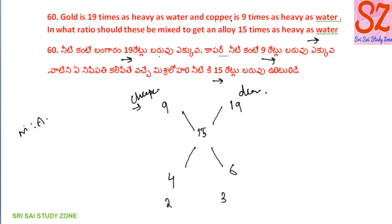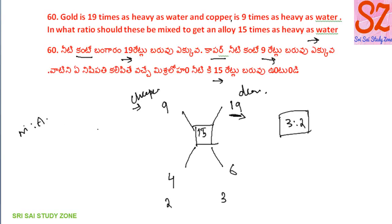Bangaram (gold) and copper ratio. So gold is 3 parts and copper is 2 parts, giving gold to copper ratio as 3 is to 2. So we have covered the questions on this topic. You can find the majority of the questions here — 6 questions on the topic. Thank you for watching.